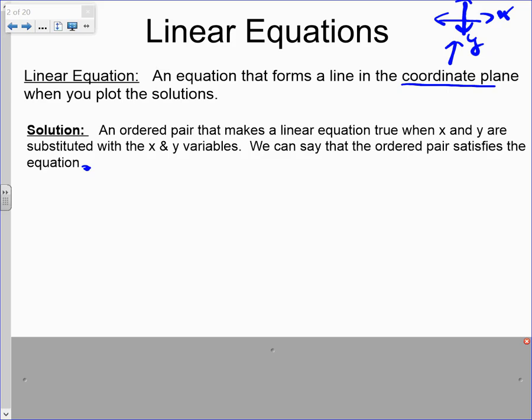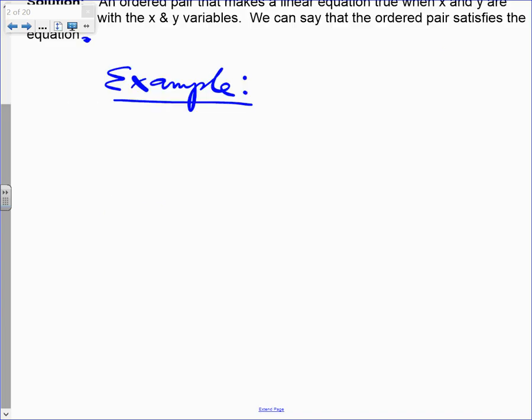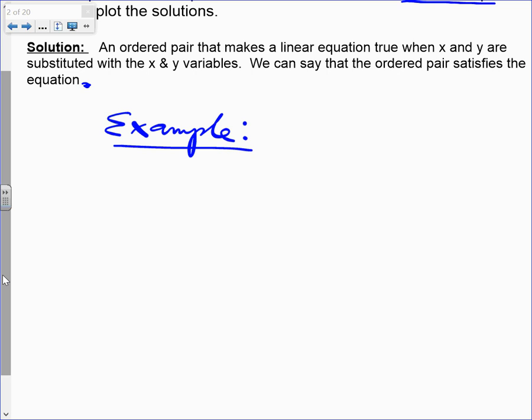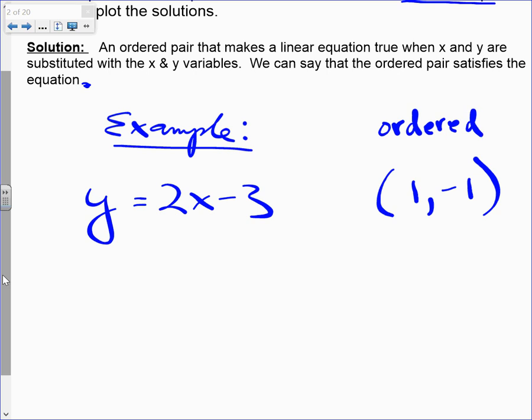I'm going to use the example from warm-up. So underneath this, I'm going to put example. Watch this. So the equation from warm-up was y equals 2x minus 3. So the ordered pair 1, negative 1. On the side, I'm going to write 1, negative 1, this ordered pair. Ordered pair 1, negative 1, is a solution. I'm going to write, is a solution.